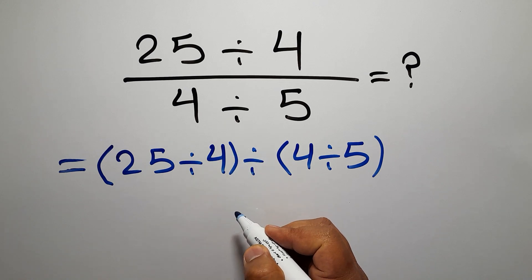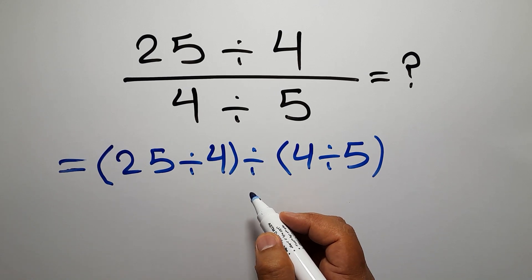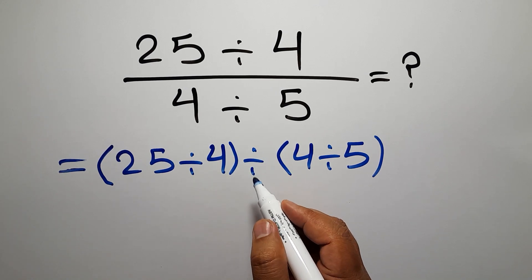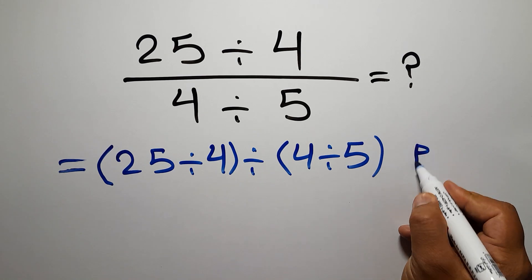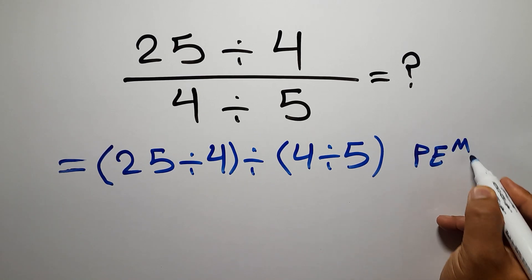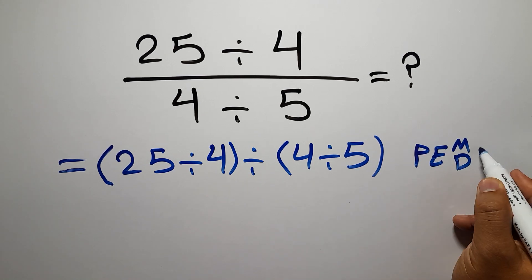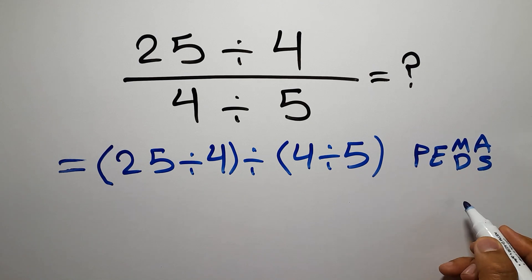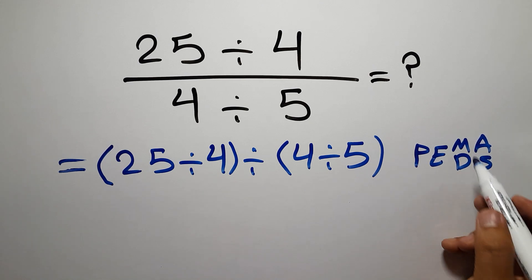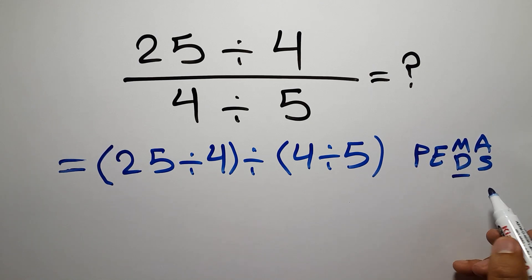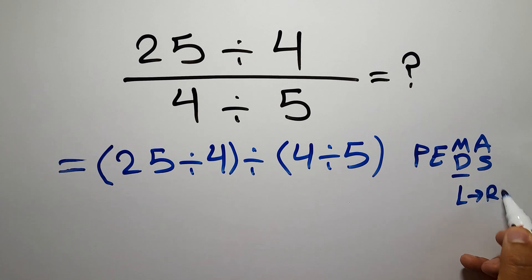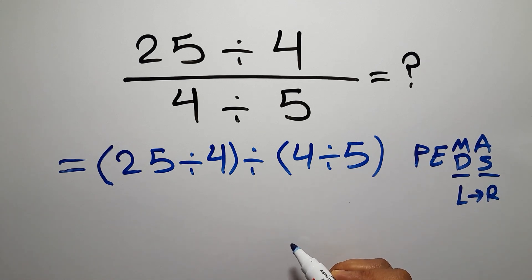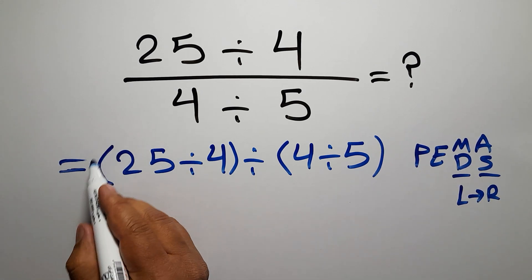We need to follow the order of operations. According to the order of operations, first we have to do parentheses, then exponents, then multiplication or division, and finally addition or subtraction. Remember that multiplication and division have equal priority and we work from left to right, and the same applies to addition and subtraction.